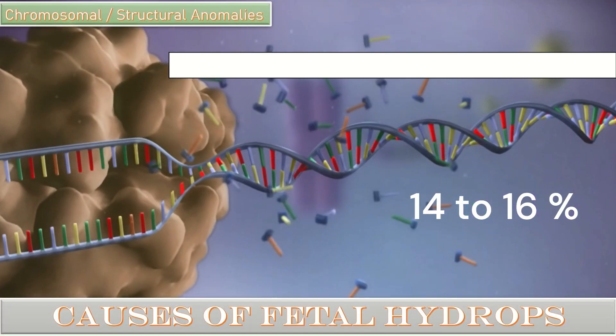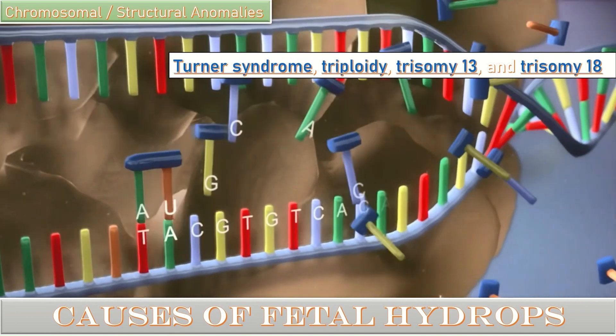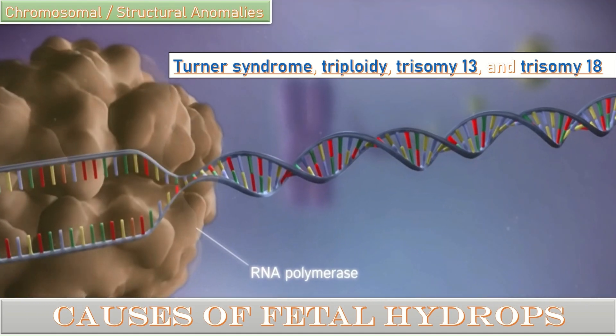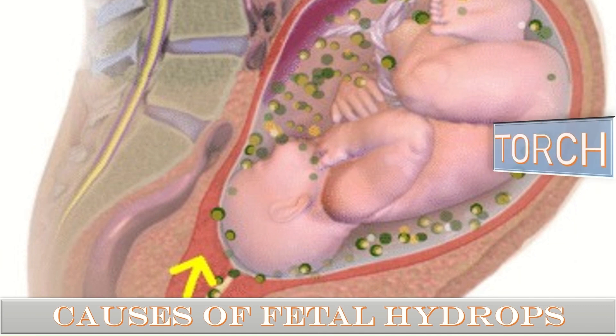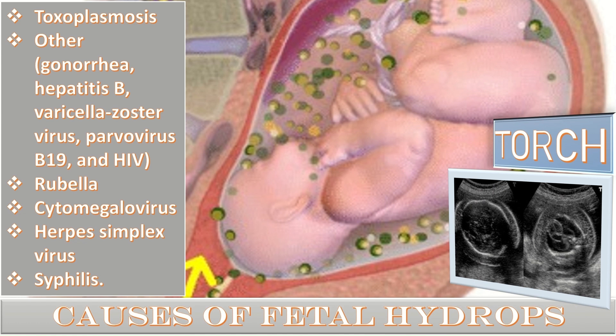Chromosomal abnormalities account for 14 to 16 percent of cases of non-immune hydrops fetalis, with Turner syndrome, triploidy, trisomy 13, and trisomy 18 being the most common. TORCH infection stands for toxoplasmosis and others like gonorrhea, hepatitis B, varicella zoster virus, parvovirus B19, HIV, rubella, cytomegalovirus, herpes simplex virus, and syphilis. Hydrops fetalis occurs in TORCH when the rate of interstitial fluid production by capillary ultrafiltration exceeds the rate of interstitial fluid return to the circulation via lymphatic vessels.